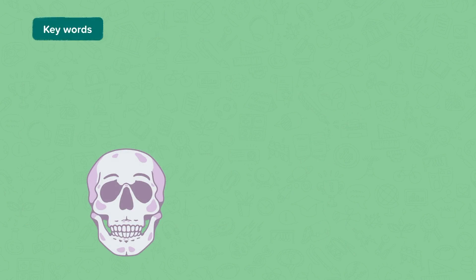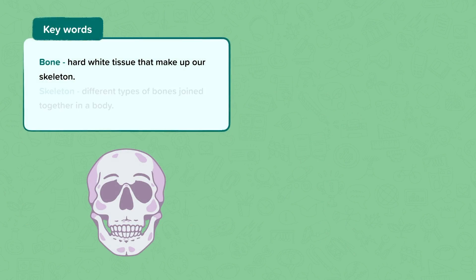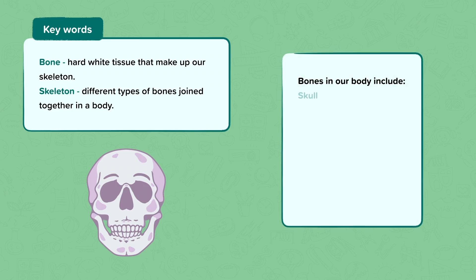The key words we used were: bone, which is the hard white stuff that makes up your skeleton; skeleton, the different types of bones joined together inside your body. And then we labelled our skeleton using the words skull, shoulder blade, collarbone, ribs, pelvis, thigh bone, kneecap and spine.